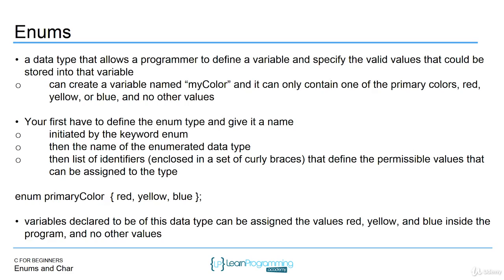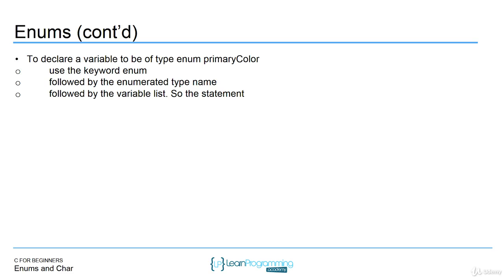The first step is defining it, the second step is using it. After we've defined it, we can declare a variable of this type primary color. The way we declare the variable is we still use the enum keyword, then the name of the enum we specified when we defined it, and then a variable list. Here we have two enums of type primary color: my color and Greg's color. These two variables can only contain one of those three values — can't contain anything else.